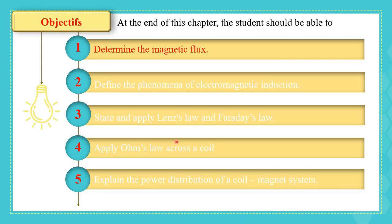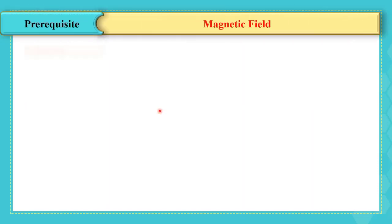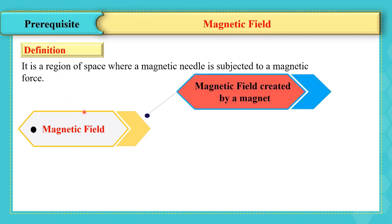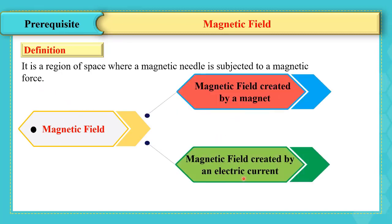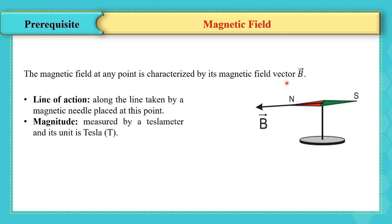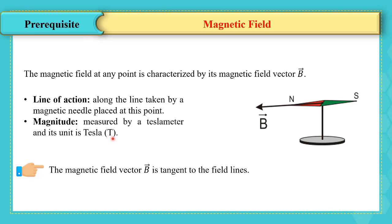In this video we are going to explain the first objective: determination of magnetic flux. First, let's talk about the magnetic field. It is a region of space where a magnetic needle is subjected to a magnetic force. The magnetic field can be created by a magnet or by an electric current. The magnetic field at any point is characterized by its magnetic field vector B. The magnitude is measured by a device called a Tesla meter, and the unit of the magnetic field is Tesla. The magnetic field vector B is tangent to the field lines.